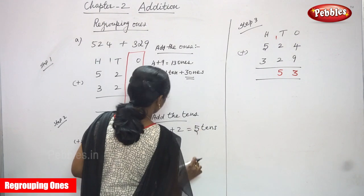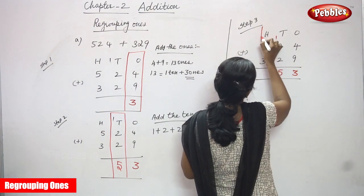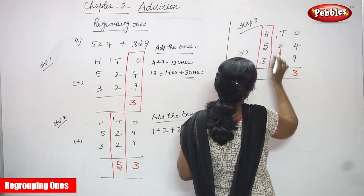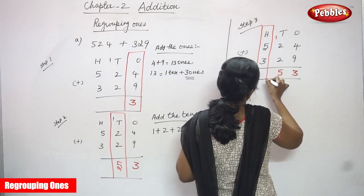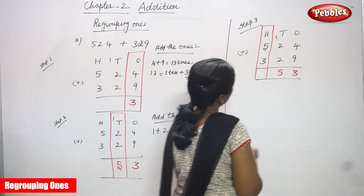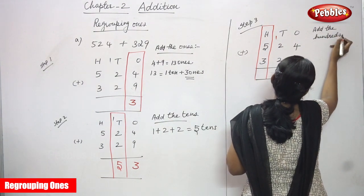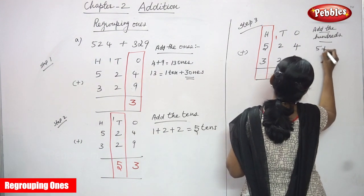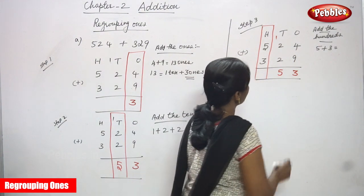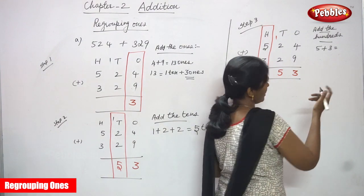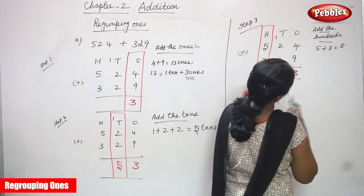Now I'm going to concentrate on the hundreds place value. Add the hundreds. There is no carry over in the tens place, so I'm just adding the hundreds: 5 plus 3. Five in the mind and three on the finger — after five: six, seven, eight. So the answer is 8 hundreds. Write 8 hundreds.